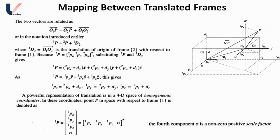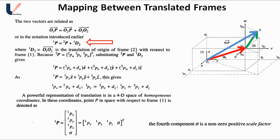The next topic is mapping between translated frames. Consider two frames such that the axes of both frames are parallel to one another. The axes of frame 1 (X, Y, Z) are parallel to the axes of frame 2 (U, V, W). P with respect to frame 1 is represented as vector O1P, and P with respect to frame 2 as vector O2P. The two vectors are related as O1P = O2P + O1O2, which can be written as 1P = 2P + 1D2, where 1D2 is the translation of the origin of frame 2 with respect to frame 1.